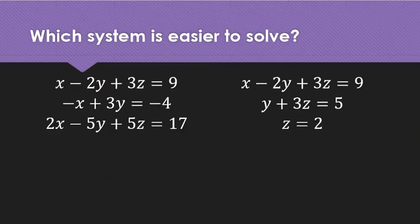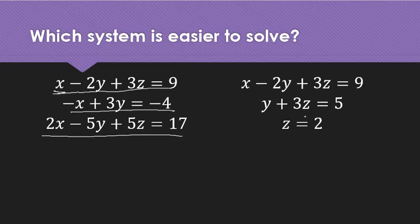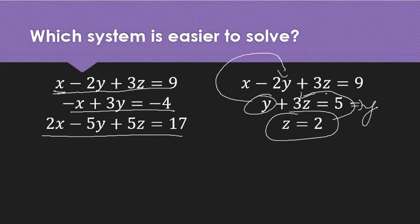Now, take a look, which is easier to solve? The one on the left or the one on the right? If you answered the one on the right, that is correct. And why do you think so? If you're going to notice, unlike here, where there is no one single equation that we can use for substitution, we already have here z equals 2, which we can easily substitute here, and we will get a value of y. Once we get the values of y and z, we can substitute them to get the value of x here. That makes solving a lot more easier.